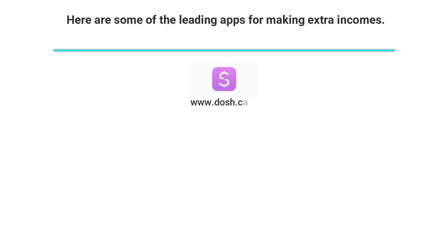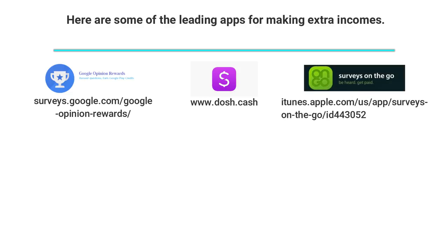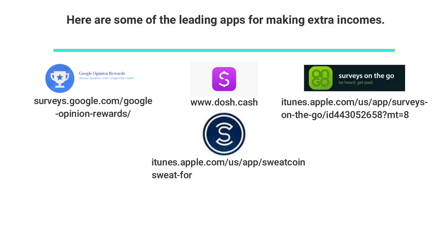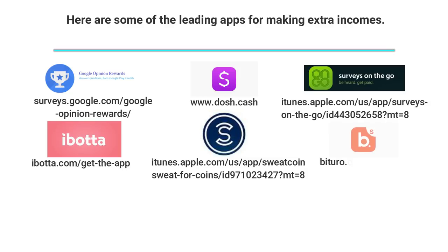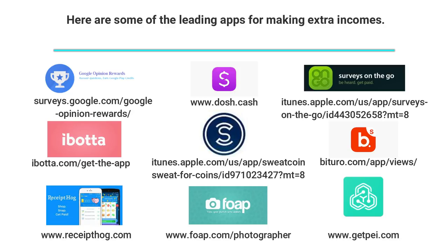Dosh.cash, surveys.google.com/GoogleOpinionRewards, iTunes.apple.com/US/app/surveysonthego, iTunes.apple.com/US/app/sweatcoin-sweat-for-coins, ibotta.com/gettheapp, Baturo.com/app/views, ReceiptHog.com, foap.com/photographer, and getpay.com.